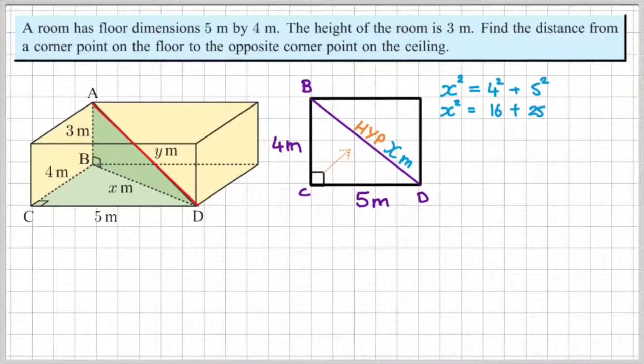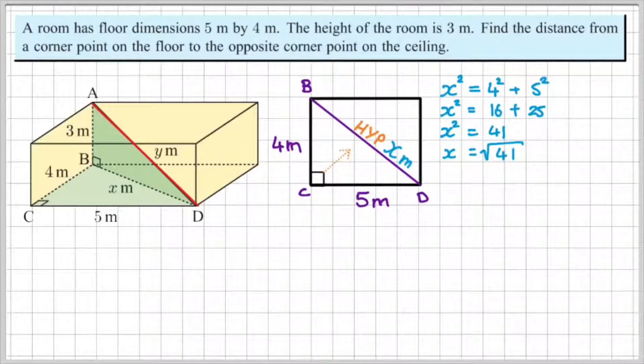So I can simplify this by writing x squared is equal to 16 plus 25. And then x squared is equal to 41. And since I know that the inverse of x squared is to square root the opposite side, I can say x is equal to the square root of 41.